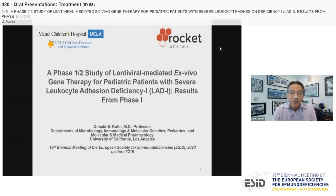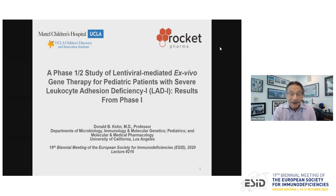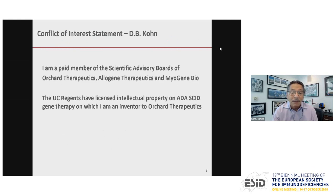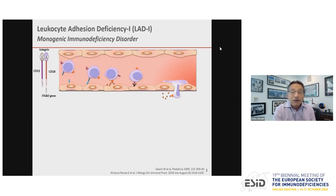Hello. My name is Donald Cohen. I'm a professor at UCLA. I'm going to present a Phase 1-2 study of lentiviral-mediated ex vivo gene therapy for pediatric patients with severe leukocyte adhesion deficiency 1, or LAD1, and show results from Phase 1 of the study. Leukocyte adhesion deficiency is a monogenic immune deficiency where the beta-2 integrin — a heterodimer of CD11 A, B, or C with CD18 — is missing. The CD18 gene is ITGB2. Mutations in the common chain CD18 of the beta-2 integrin family prevent expression of CD18/CD11 heterodimers on cell surfaces, essential for leukocyte migration and adhesion.